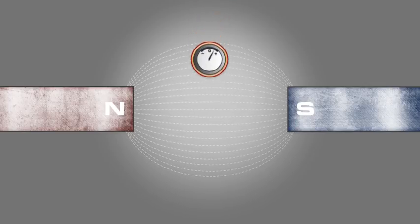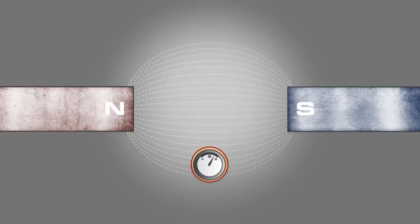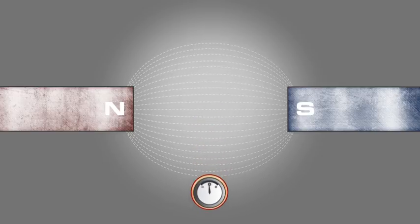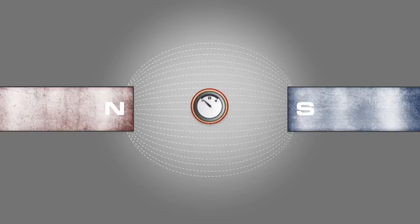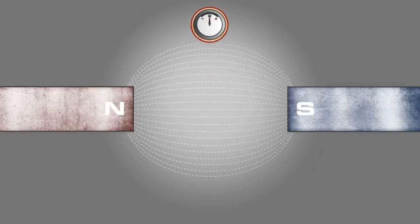As the conductor passes down through the magnetic lines of flux, it produces a current in one direction, and as it comes back up through the lines of flux, it produces current in the other direction.